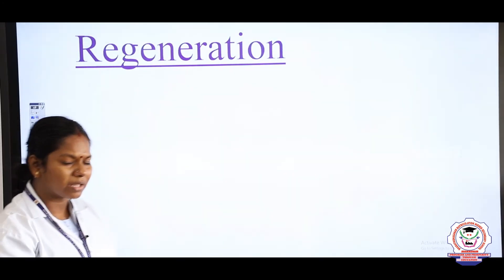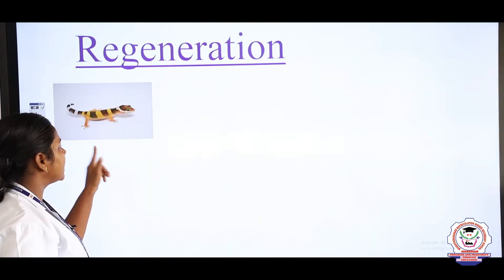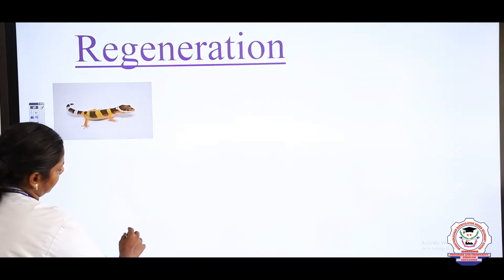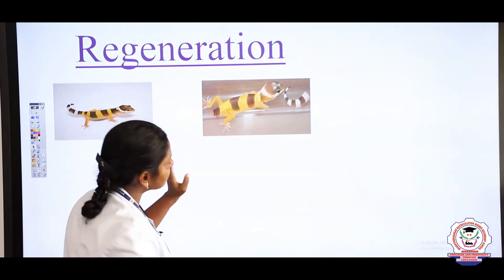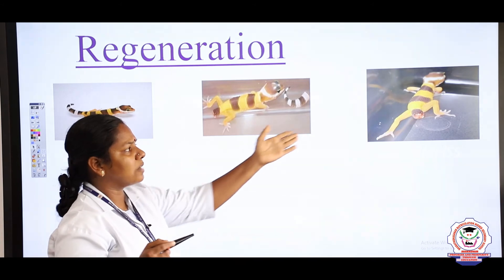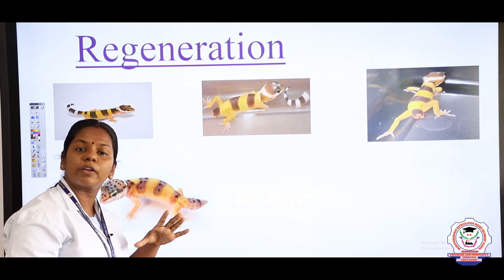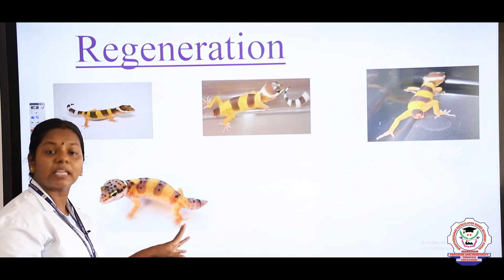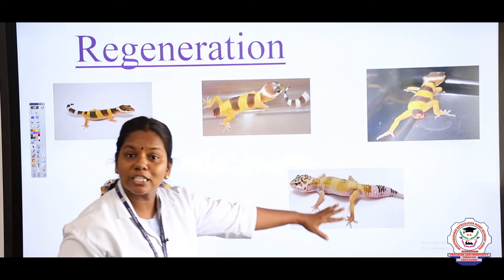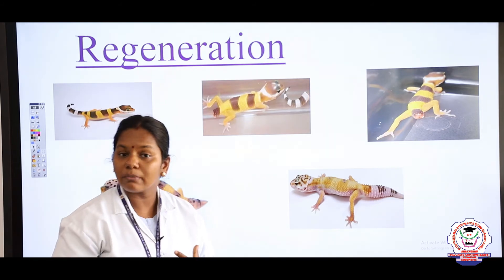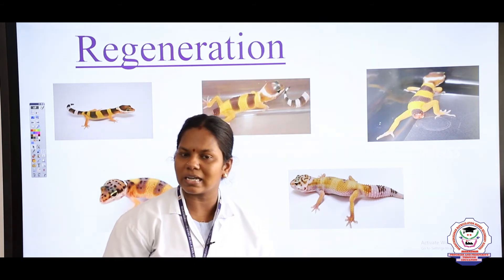Next we are going to study regeneration. A lizard has a normal tail, but due to an accident the tail gets cut off. The lizard then undergoes a special type of reproduction called regeneration — a new tail starts to develop and is finally formed. Regeneration is of two types: morpholysis and epimorphosis.